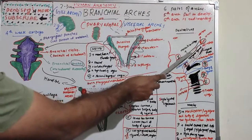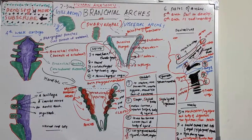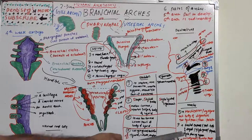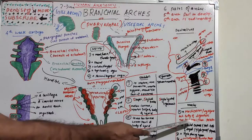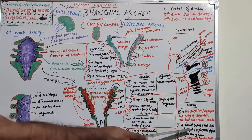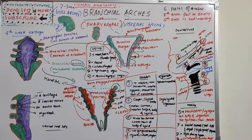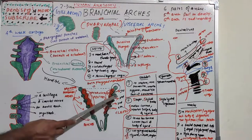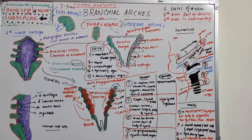To clarify the cartilage names: the first arch cartilage is Meckel's cartilage and the second arch cartilage is Reichert's cartilage — both are important exam questions. Regarding digastric muscle: the first arch gives the anterior belly of digastric, while the second arch gives the posterior belly of digastric. The nerve supply of the second arch is the facial nerve, and the blood supply is the stapedial artery.